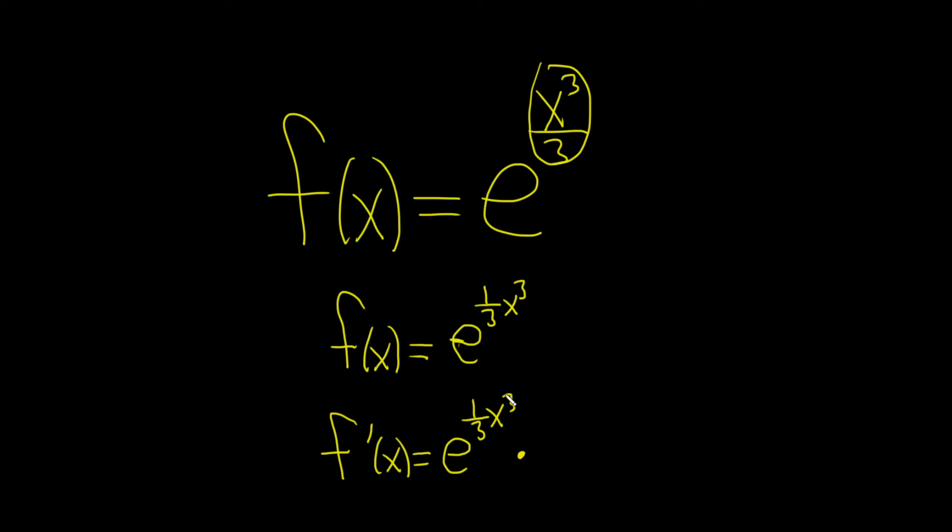you multiply by the derivative of the inside. So you bring down the three, so you get three times one-third, and then you subtract one from the exponent. So three minus one is two. So these cancel.